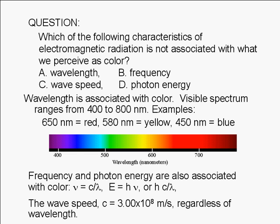Frequency and photon energy are also associated with color, since they are related to wavelength. The frequency, nu, is equal to the speed of light, c, divided by the wavelength, lambda. Photon energy, E, is equal to Planck's constant, h, times the frequency, nu — that is, hc over lambda.